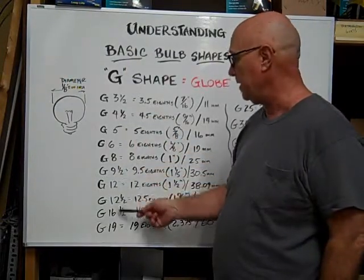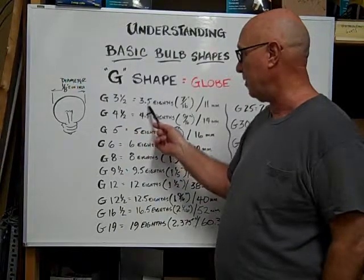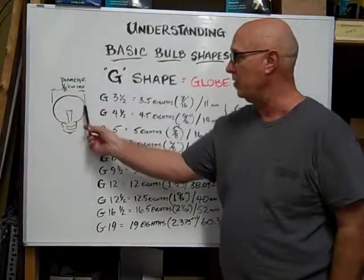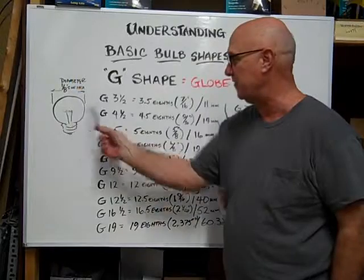the number following, like this G 3.5 is equal to 3.5 eighths of an inch. So the diameter of a globe envelope is measured in eighths of an inch.